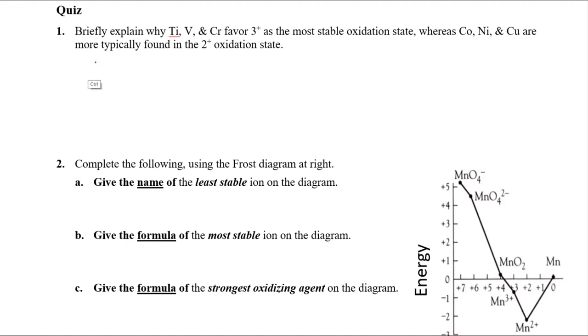Let's dive right in. This first one we're talking about titanium, vanadium, and chromium. If you look on your periodic table, you'll see these are 3d metals, as are cobalt, nickel, and copper. They differ in their placement along the row. Titanium, vanadium, and chromium are far to the left side of the d-block, while cobalt, nickel, and copper are very far to the right side of the d-block.